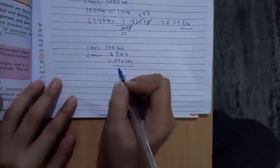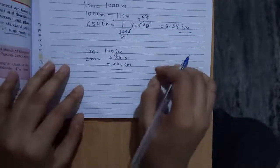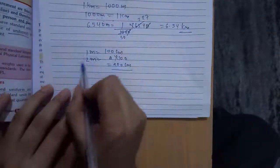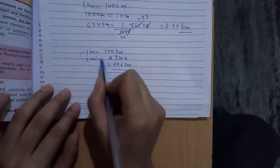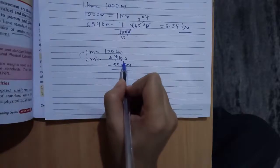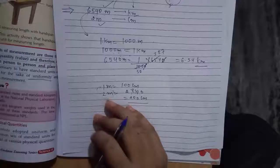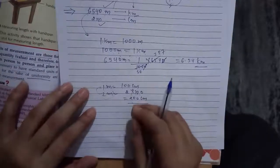By this method we can convert meters into kilometers and meters into centimeters. Because 2 meters is larger than 1 meter, we multiply: to get more (smaller unit) we multiply, and to get less (larger unit) we divide. This topic has finished here. Thank you.